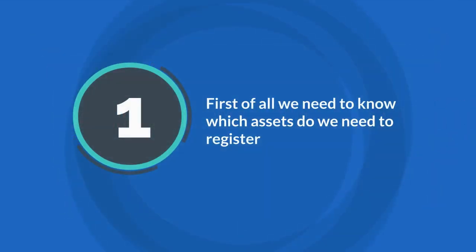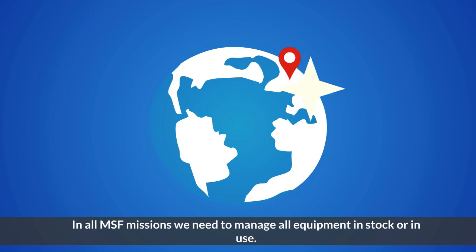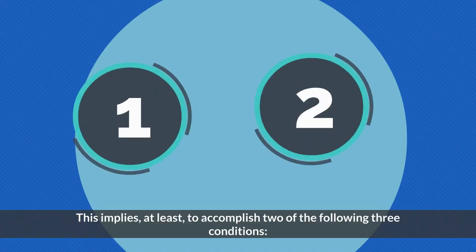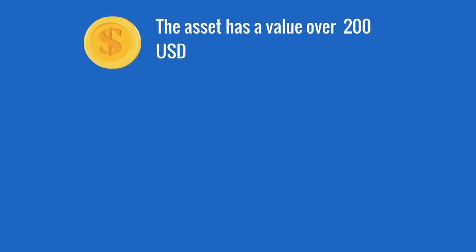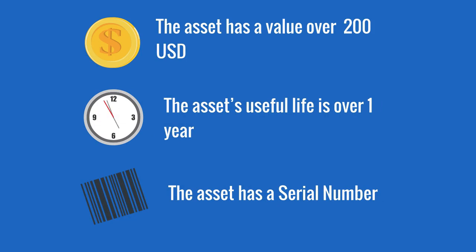First of all, we need to know which assets we need to register. In all MSF missions we need to manage all equipment and stock in use. This implies, at least, accomplishing two of the following three conditions: the asset has a value over 200 US dollars, the asset's useful life is over 1 year, or the asset has a serial number.